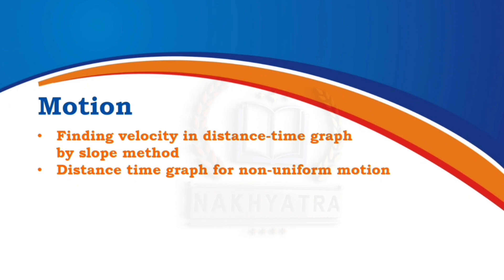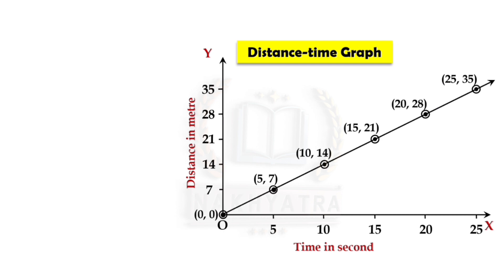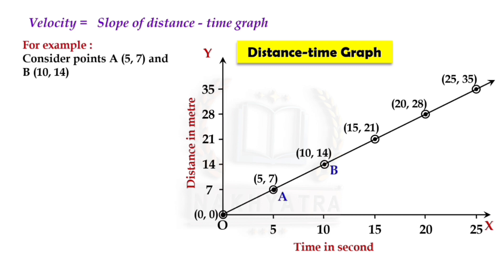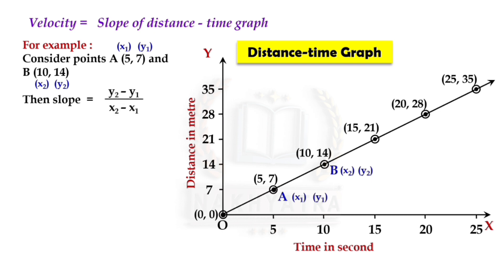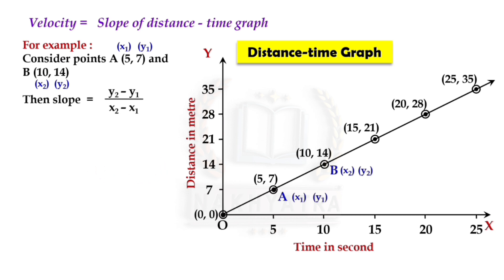Next: finding velocity in a distance-time graph by the slope method, and the distance-time graph for non-uniform motion. To find the velocity of an object in a given graph: velocity equals the slope of the distance-time graph. Consider points A and B where x₁ = 5, y₁ = 7, x₂ = 10, and y₂ = 14. Then slope = (y₂ − y₁) / (x₂ − x₁) = (s₂ − s₁) / (t₂ − t₁). Putting in the values, we get 1.4 meters per second. Therefore, velocity = 1.4 m/s.